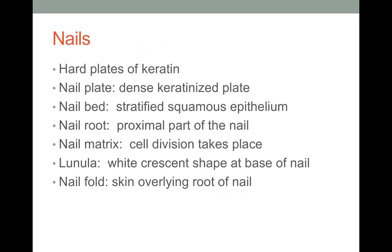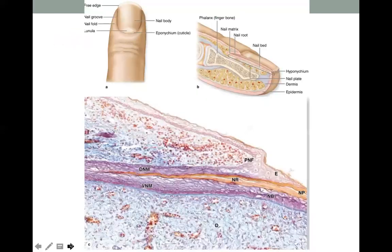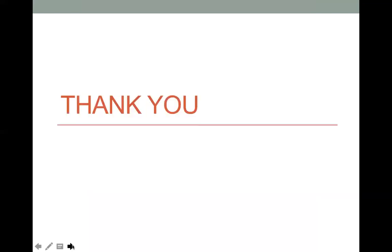The nails are hard plates of keratin. The nail plate is a dense keratinized plate, and the nail bed is lined by stratified squamous epithelium. The proximal part of the nail is the nail root. The nail fold and the lunula — the white moon-shaped structure — are also identifiable. Keratinization occurs at the nail root area, so injury to this region will result in problems with nail formation.